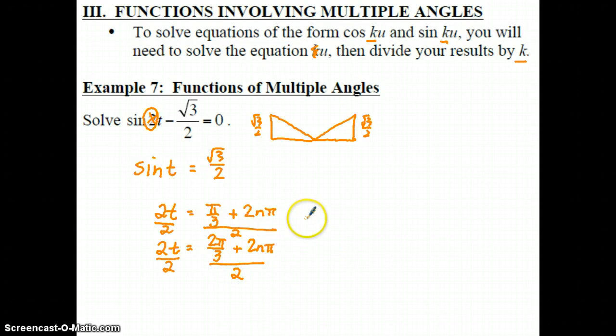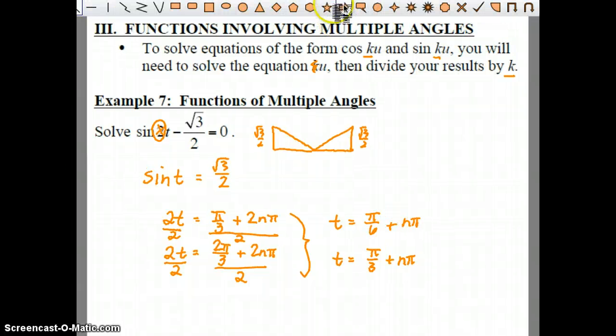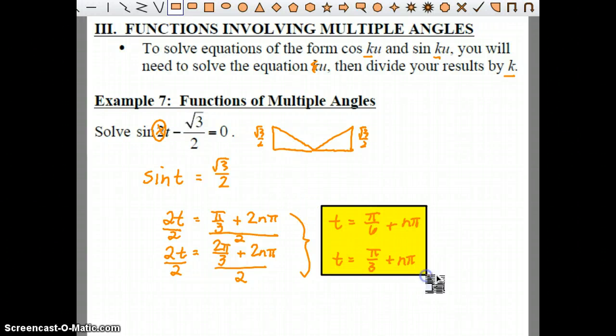So that means we're going to end up getting t equals pi over 6 plus n pi. And then for the bottom answer, we're going to get t equals pi over 3 plus n pi. And then that is going to be your solution. So if we just put a little box around here, there are your t values.